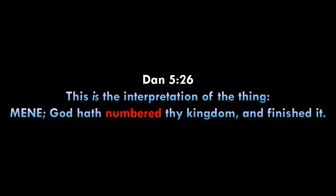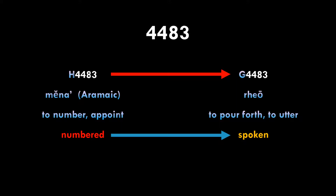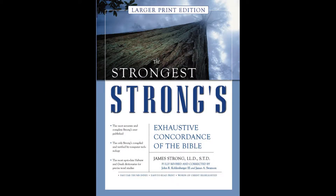The interpretation of the thing — Mene: God hath numbered thy kingdom and finished it. We are saying that the words of God are numbered. When we look them up in the Strong's Concordance, we see that the word 'numbered' — H4483 — shares the same number with G4483, G being the Greek designation for words from the New Testament. This is found in the Strong's Concordance.